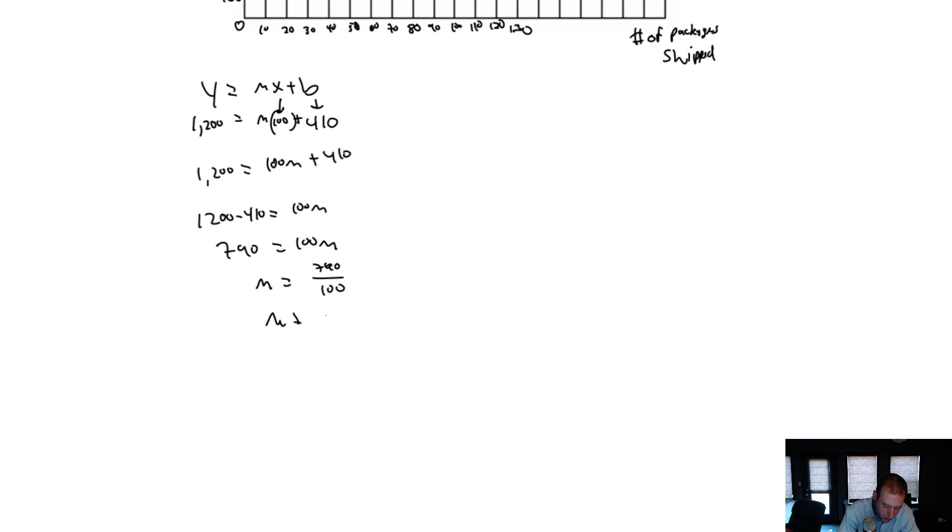1200 - 410 is 790. 790 = 100m. So m = 790 / 100. m = 7.9. So my formula for a line here is y = 7.9x + 410.